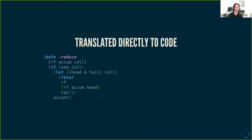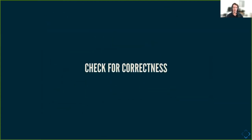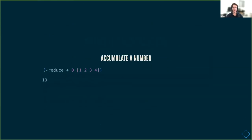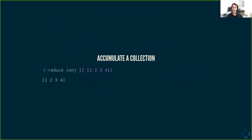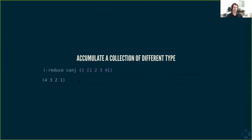This is a version with less annotations. Let's check if this works. We can accumulate a number — using plus as our function, starting from zero, with a vector of numbers — and we can sum them. We can also accumulate a collection using conj. We take an empty vector as an initial value and accumulate the values into it. If we pick a different initial value — for example, accumulating into a list using conj — the list grows at the front.